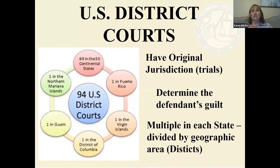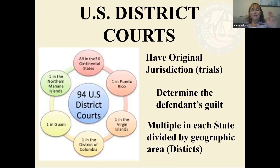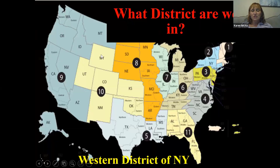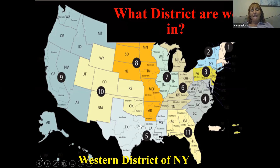U.S. District Courts have original jurisdiction — all actual federal trials occur there. States are divided into districts based on population, described by geographic area. New York has four districts: western, northern, eastern, and southern. We are in the Western District of New York. Some states with smaller populations have only one district covering the entire state.